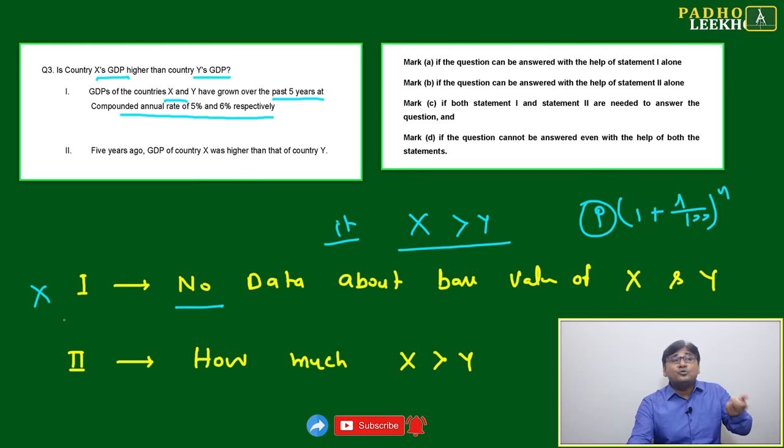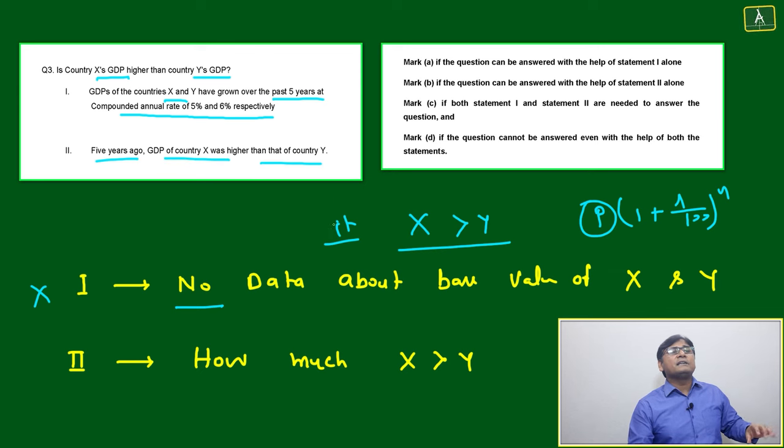Now statement two says five years ago GDP of country X was higher than country Y. If you just consider statement two, then again you will not be able to give the answer because you don't have the data about the rate of increase of GDP for X and Y.